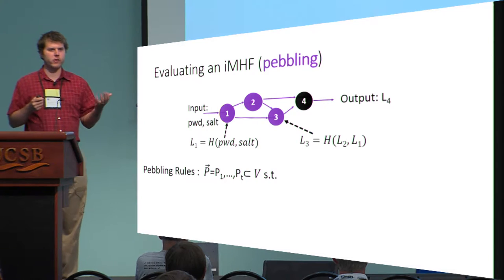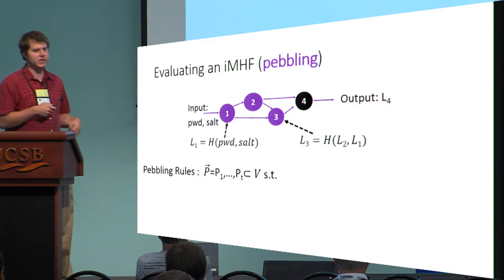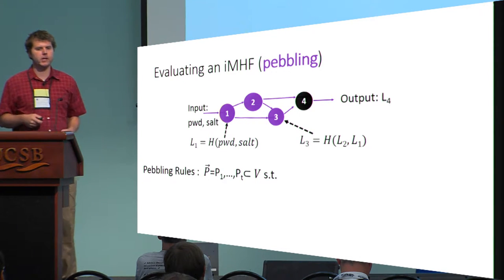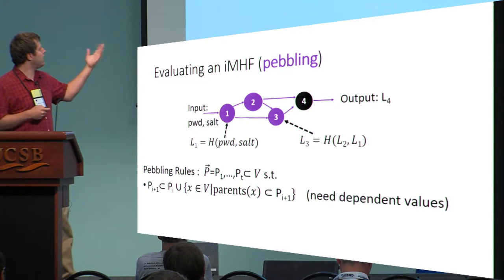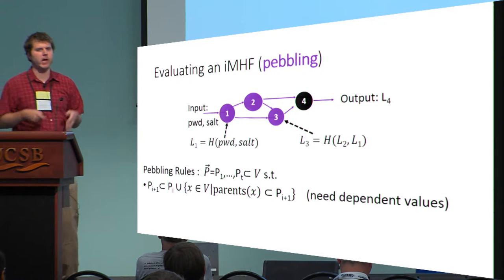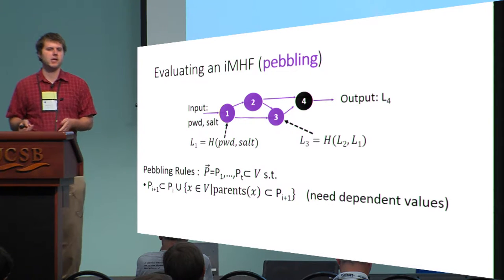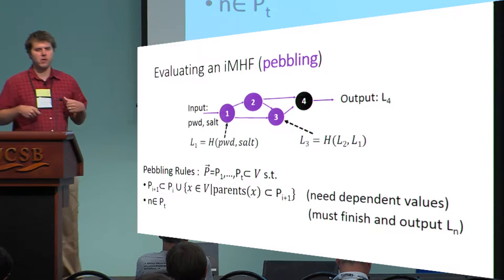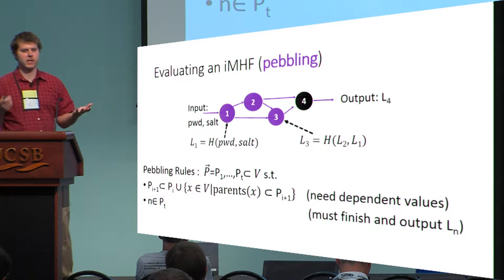We can describe algorithms that the adversary might use to compute an iMHF using the language of graph pebbling. In particular, placing a pebble on the graph corresponds to computing a particular data label, and keeping a pebble on the graph corresponds to storing that data label in memory. A pebbling is only valid if it satisfies certain rules. For example, we can only place a pebble on a node in round i+1 if we had pebbles on the parents of that node in round i, because we need any dependent values before we can compute the new label. By the end of this pebbling, we have to place a pebble on the final node — after all, that's the output we're trying to compute.